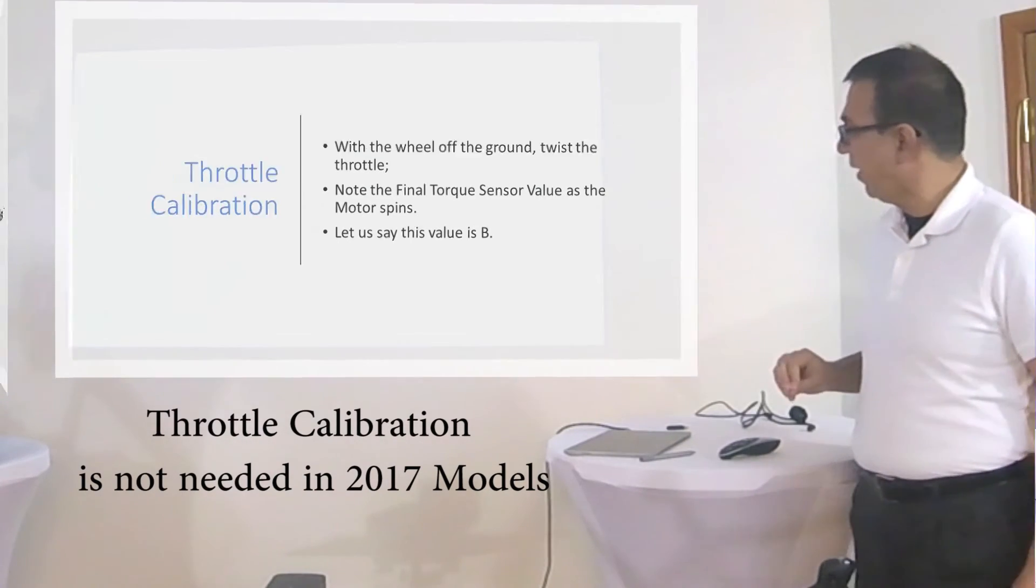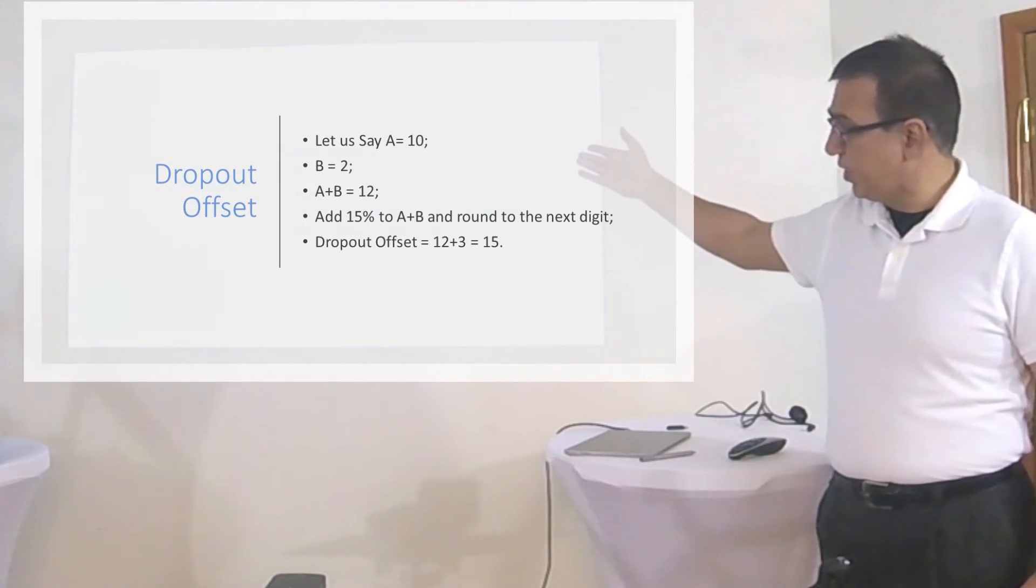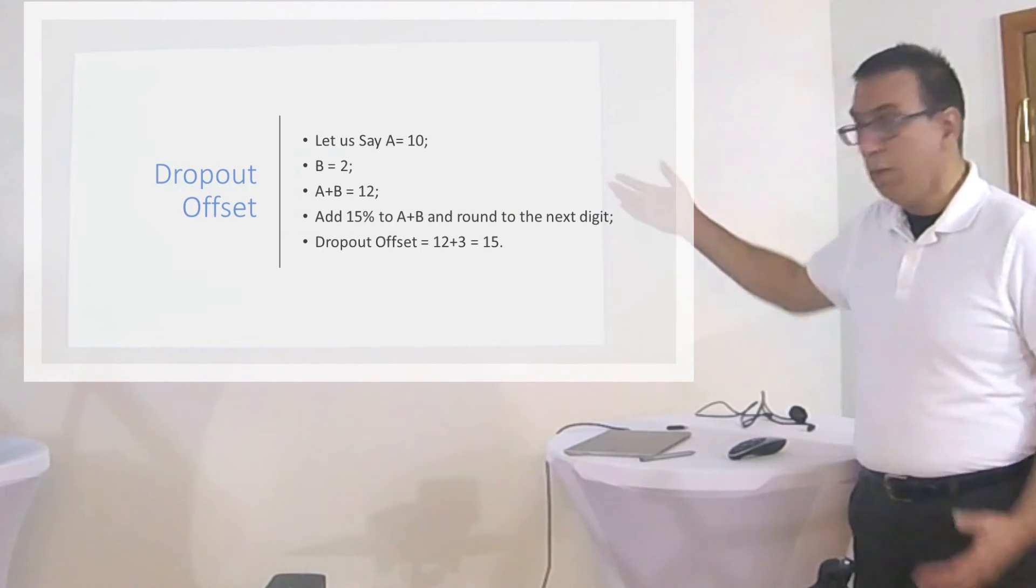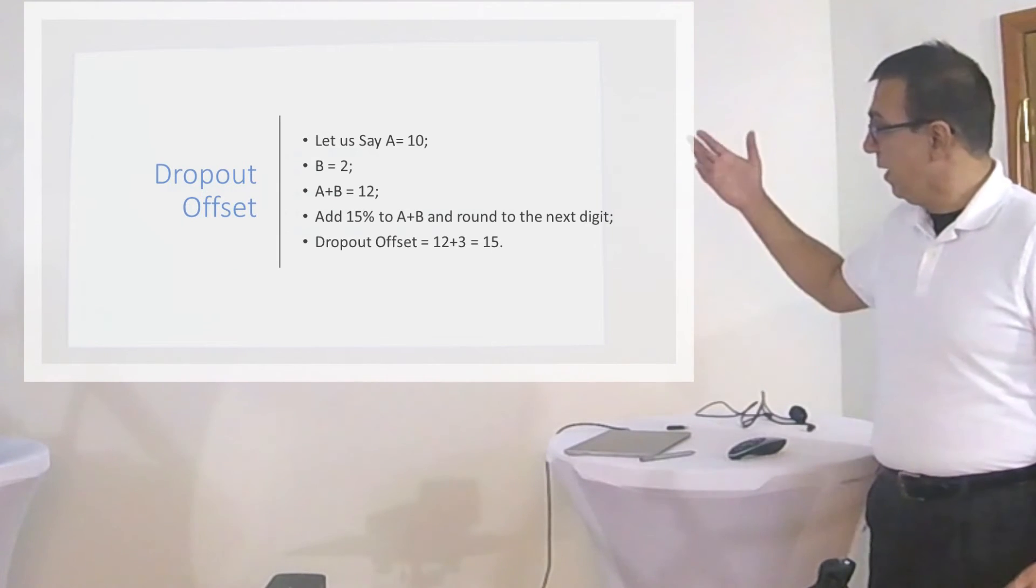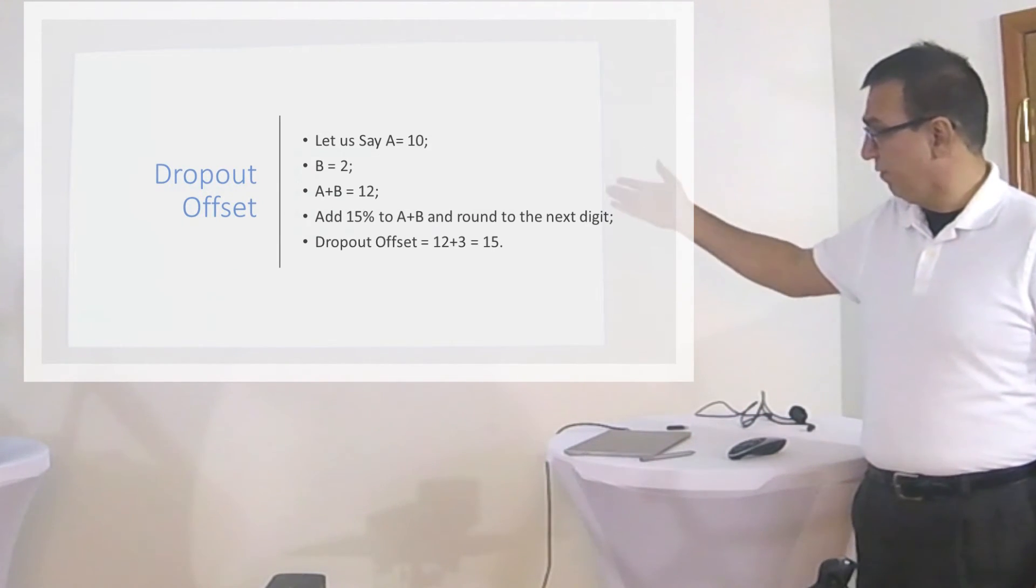We add these two values. The standstill calibration value is A. The throttle calibration is B, which is 2. A plus B is 12. We have a 15% headroom on top of it. We count and make the dropout offset value to be 15.